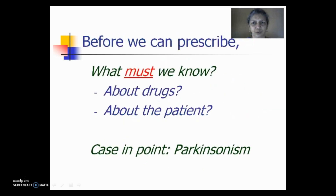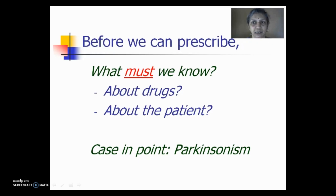What must we know before we think of prescribing a medication for the patient in front of us? What knowledge is required for deciding and deriving the best possible treatment for any clinical condition? Let us try to understand this with the help of Parkinsonism as the case in point.